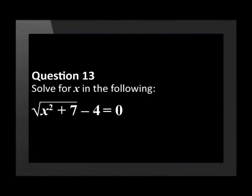Question 13. Solve for x in the following: the square root of x squared plus 7, minus 4, equals 0.